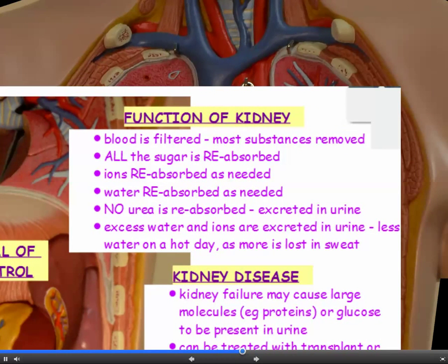The way that the kidneys work is that the blood is first filtered — it's exactly like a filter, exactly like a sieve — and most substances are initially removed from the blood. But then, on its journey through the kidney, all the sugar is reabsorbed — all of it. It has to be all of it, because glucose is our precious respiratory substrate, and our body is not in the business of excreting our respiratory substrate. It's important to say reabsorbed, not just absorbed, because it's already been absorbed in the small intestine. It has to be reabsorbed.